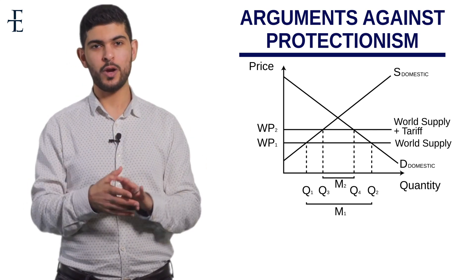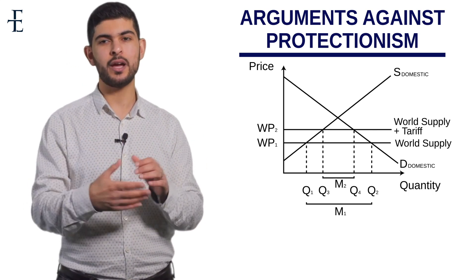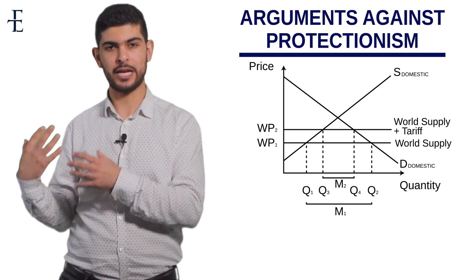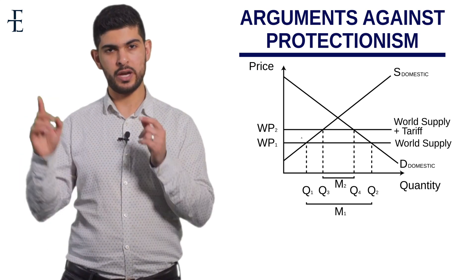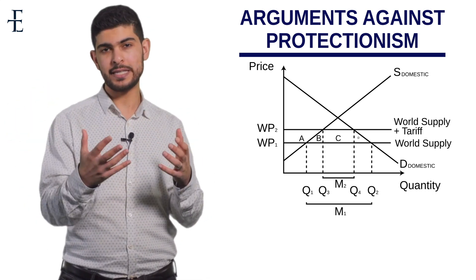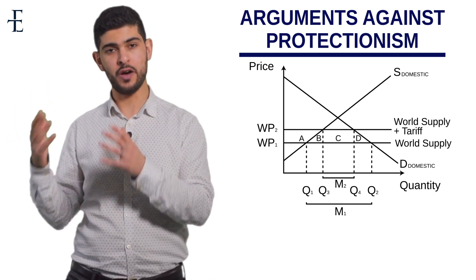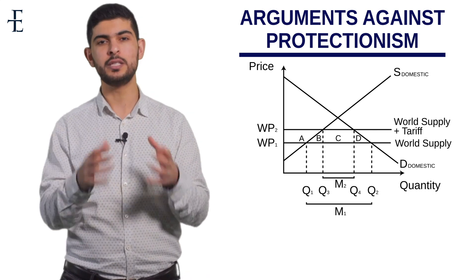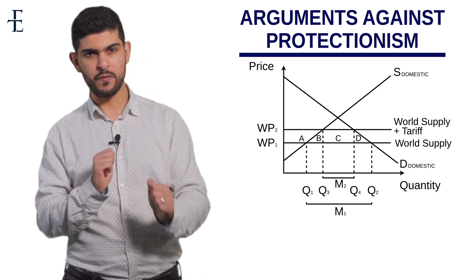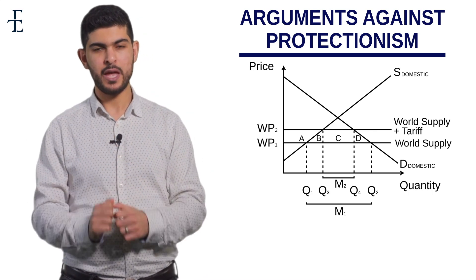Now, always label the four sections on this diagram: area A, triangle B, rectangle C, and the other triangle D. In every economy there are three players — consumer, producer, and government. If we can identify that the net effect of this tariff is negative overall, that is a very strong argument against imposing a tariff.